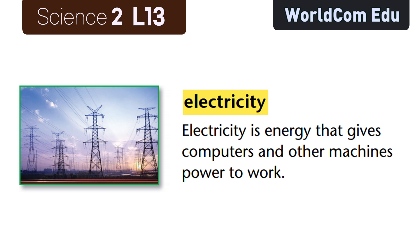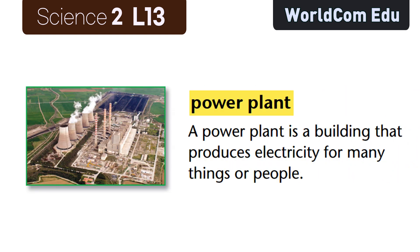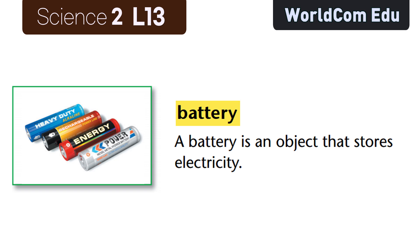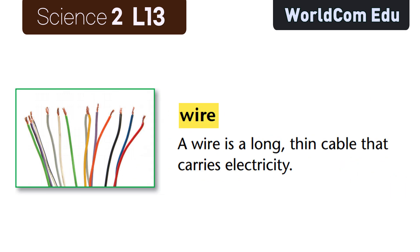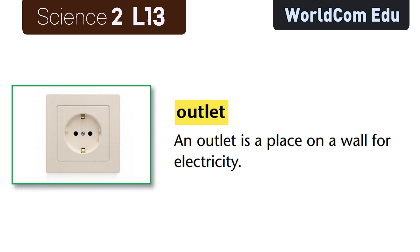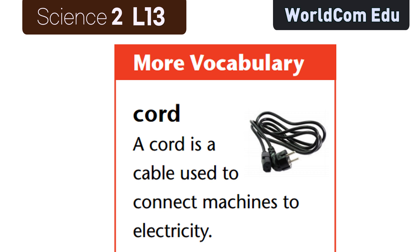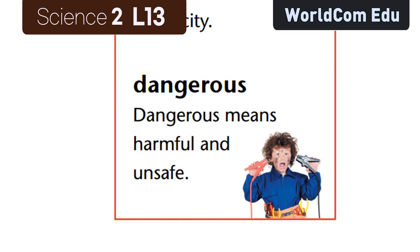Lesson 13 vocabulary review: Electricity is energy that gives computers and other machines power to work. A power plant is a building that produces electricity for many things or people. Fuel is something burned to make heat or power. A battery is an object that stores electricity. A wire is a long thin cable that carries electricity. An outlet is a place on a wall for electricity. A cord is a cable used to connect machines to electricity. Dangerous means harmful and unsafe.